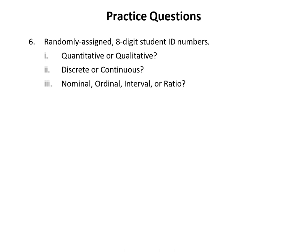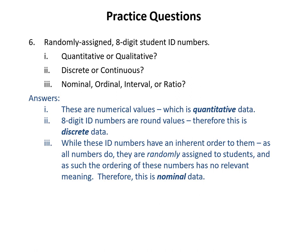Question six: randomly assigned eight-digit student ID numbers. These are numerical values, so quantitative. They're whole numbers we could show in a list with no intermediate values, so discrete. While these ID numbers do have an inherent numerical order, since they're randomly assigned to students, the ordering has no relevant meaning. Therefore we classify this as nominal data. Answer: quantitative, discrete, and nominal.